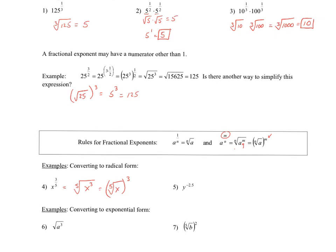Now take a look at number five. We notice a negative exponent, and we know how to handle those. The other piece is that it's a decimal, so we want to change that first into a fractional exponent. I'm going to rewrite this as y to the negative 5/2 power, which, taking care of the negative exponent, becomes 1 over y to the positive 5/2. Now I can convert that into radical form, so that would be 1 over the square root of y to the fifth, or 1 over the square root of y, the whole quantity to the fifth power.